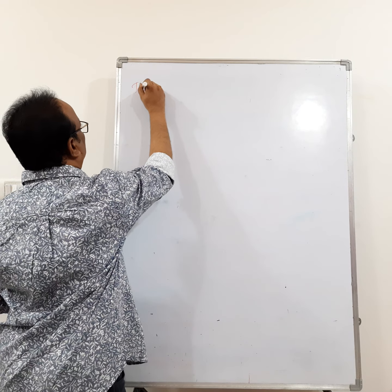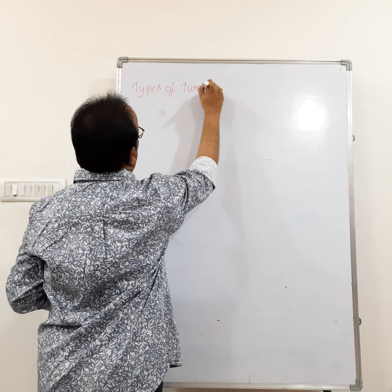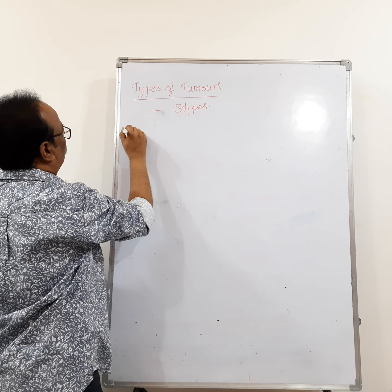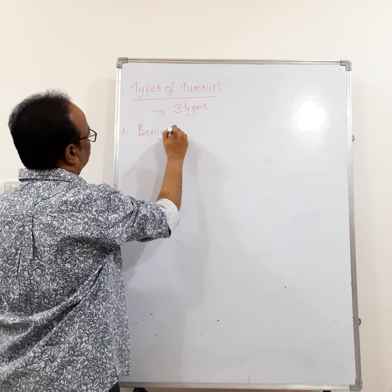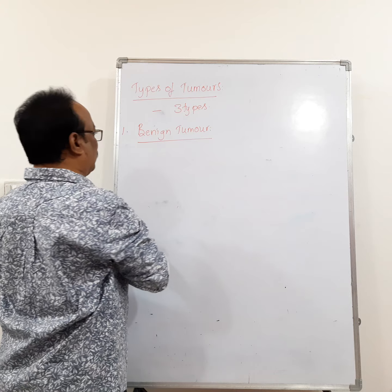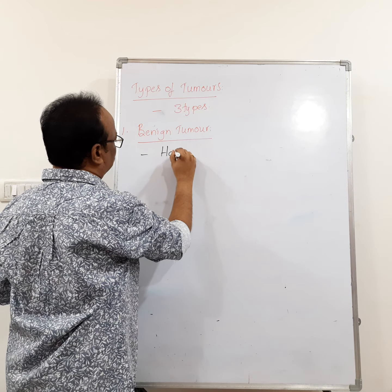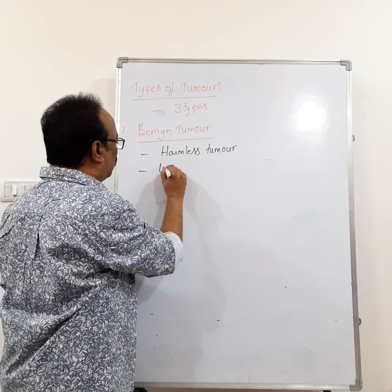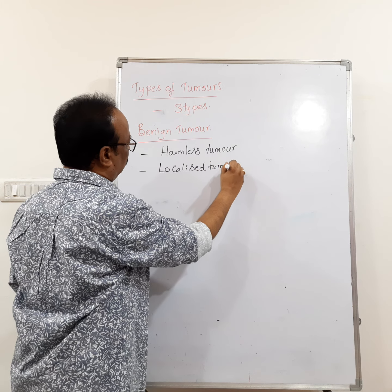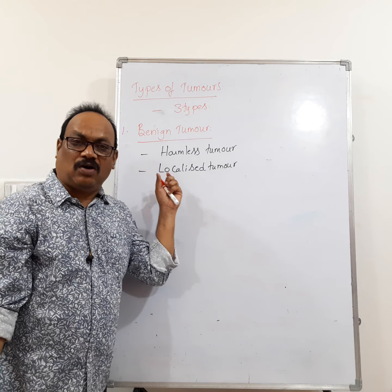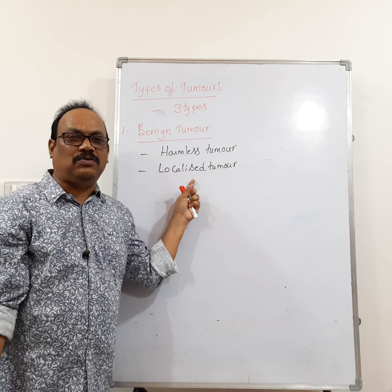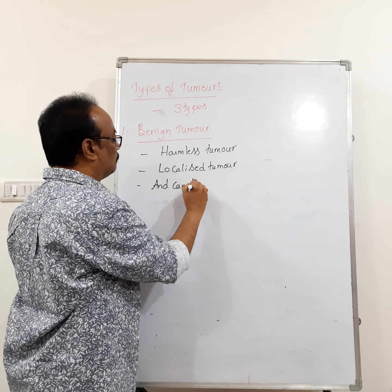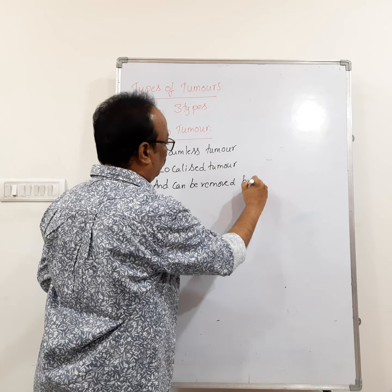There are three types of tumors. The first one is the benign tumor. A benign tumor is a harmless tumor — it does not cause much harm. It is a localized tumor, meaning it remains where it originates in the body and does not migrate to another part.